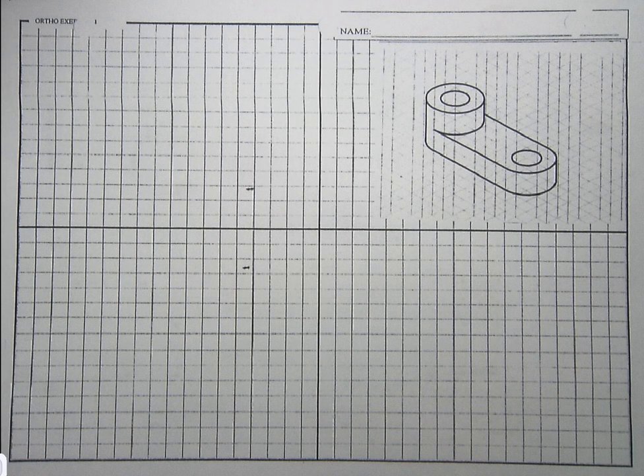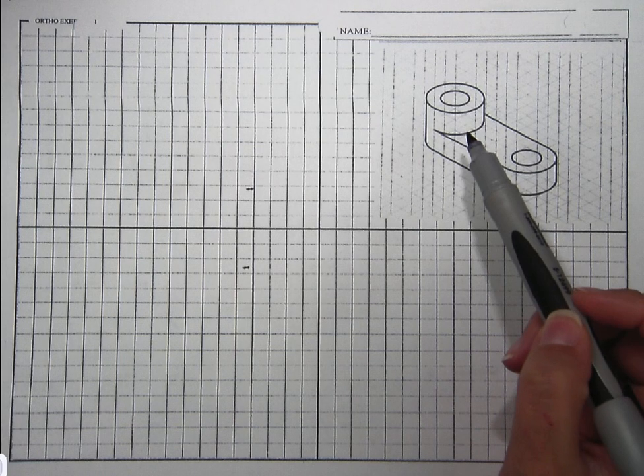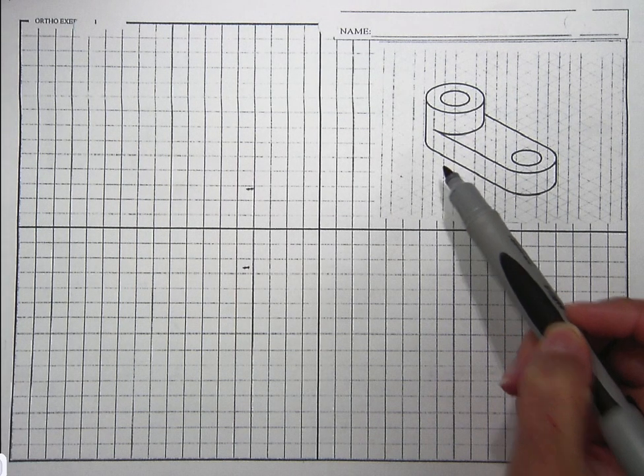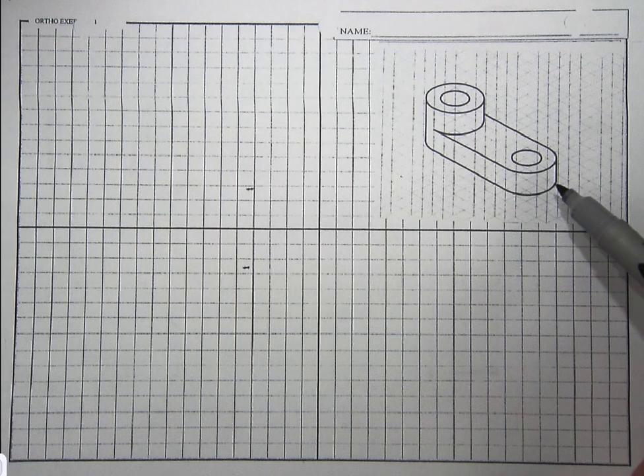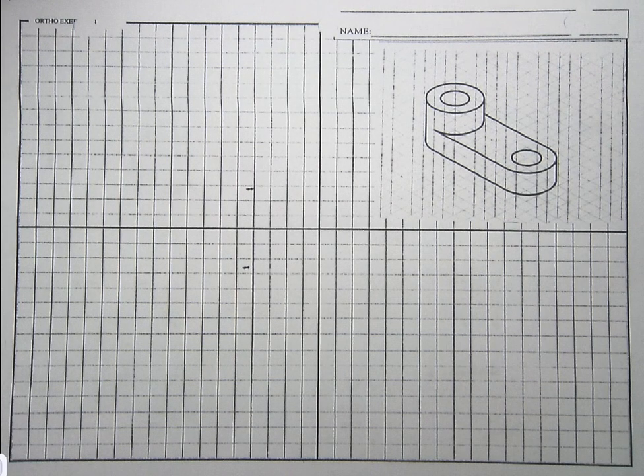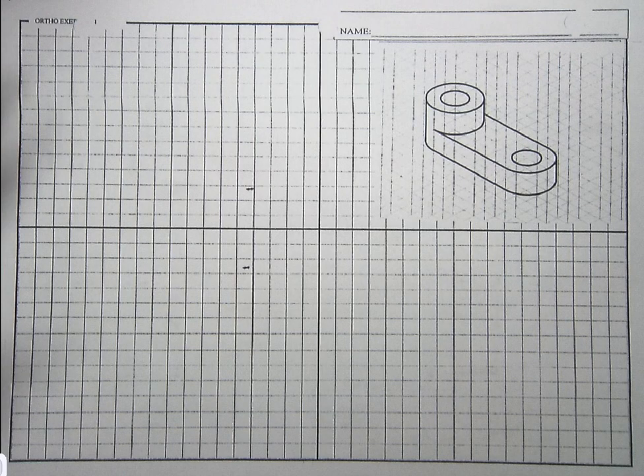So it starts the same. I know that this right here is my front view. This would be my right view. And this right here is my top view, facing down on it.